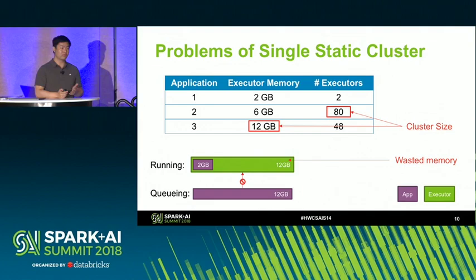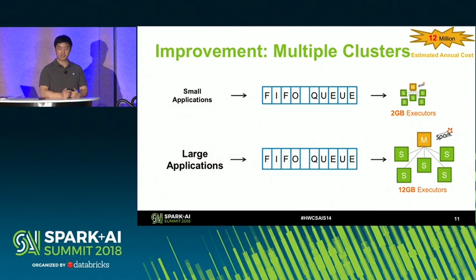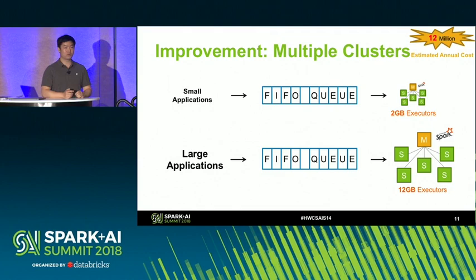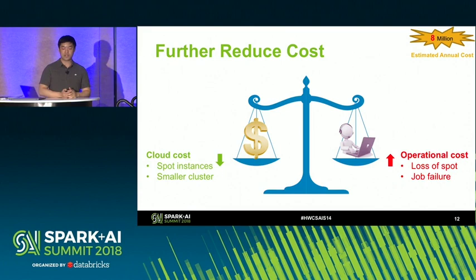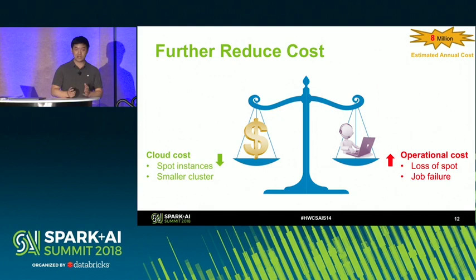By identifying this problem, we came up with version two: splitting the cluster according to different executor sizes. This solved the memory waste problem, and the estimated cost would drop from $50 million to $12 million with this simple approach. When we have a Spark job, it just needs to submit to the right cluster of the right size. We can further drop the cloud cost to $8 million by aggressively using spot instances and cutting the cluster size to just enough. However, this increases our operational cost.